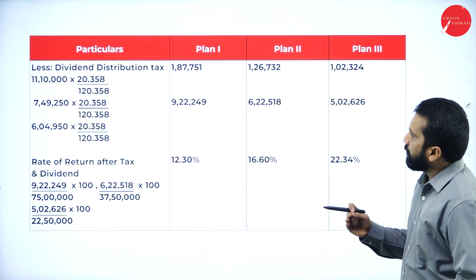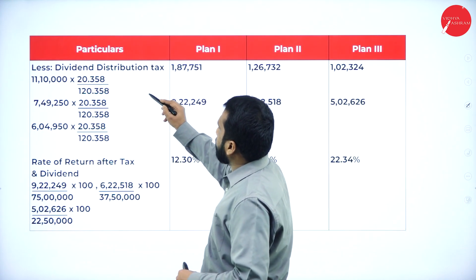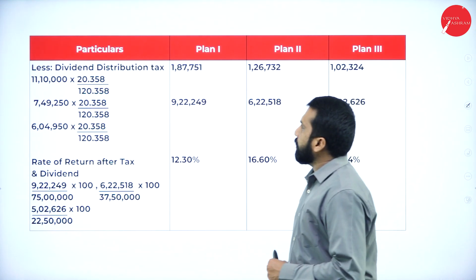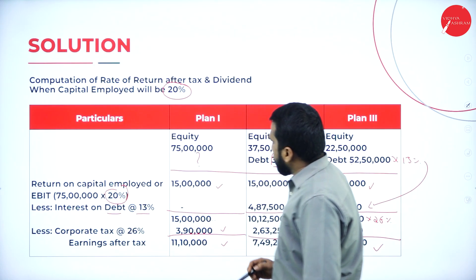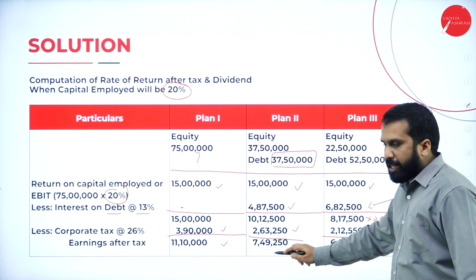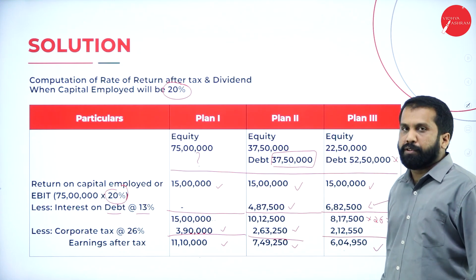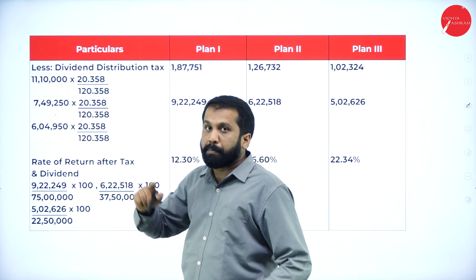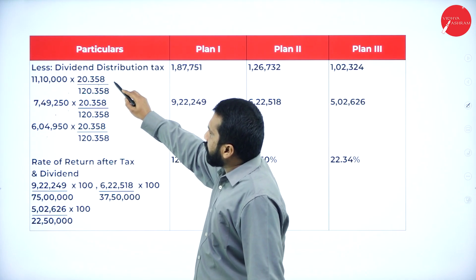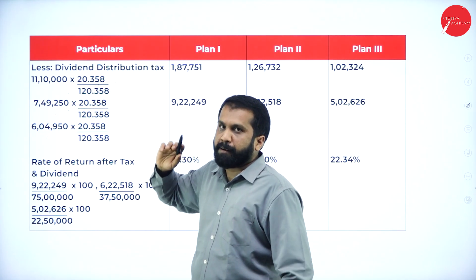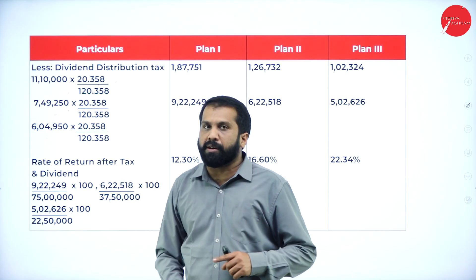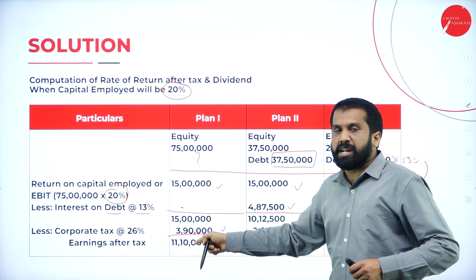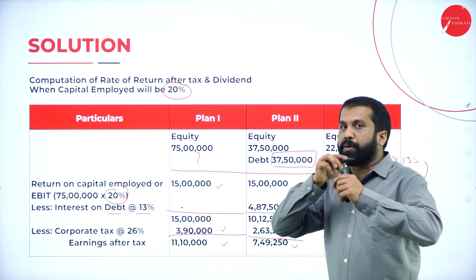Once done with that, the next topic will be dividend distribution tax. Under this, whatever answer you got — 11,10,000; 7,49,000; 6,04,000 — take all the answers and multiply with 20.358 divided by 120.358. Always remember, we take 120 because dividend is already included in this. That's why we take 120, not 100.